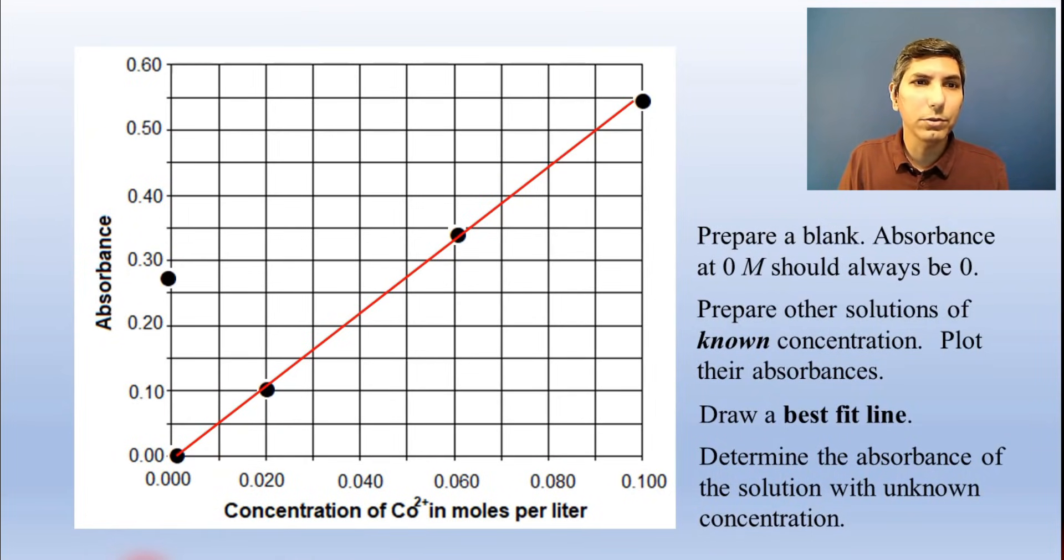It's a line that plots concentration on the x-axis and absorbance usually on the y-axis. Then, we take an unknown solution and once we get its absorbance, we line it up to the calibration curve and use that to estimate the concentration of the unknown.